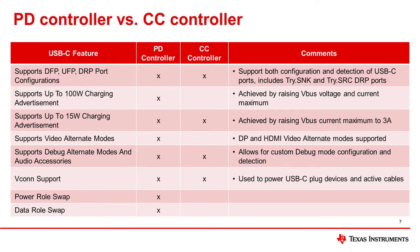So how are CC1 and CC2 being controlled? They are both controlled by either a PD or a CC controller. The table above lists the feature differences between a PD controller and a CC controller. Depending on the required features of the USB-C design, either will be used. For example, if video alt mode is required, the PD controller must be used, because the CC controller does not support video alt mode. On the other end, if video alt mode is not required and only 15 watts of charging is needed, then the CC controller will be the better choice.